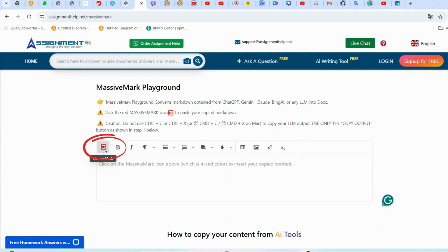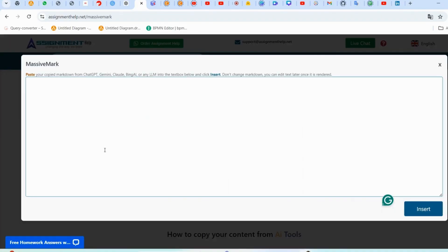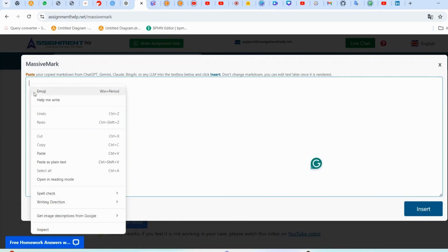Click the red MassiveMark icon. The MassiveMark input text box will pop up. Here you can now paste your copied content, which you copied from ChatGPT, Gemini, etc., and click Insert.